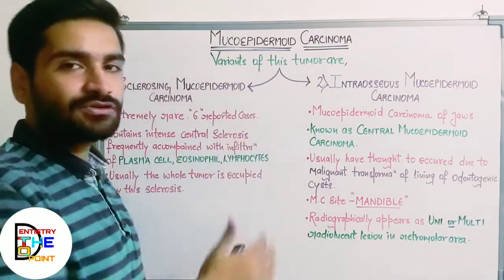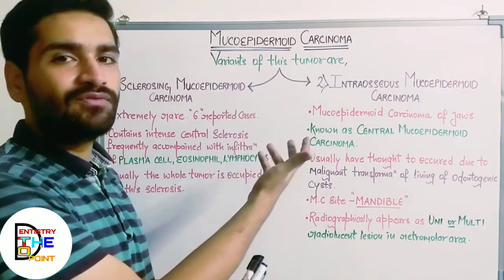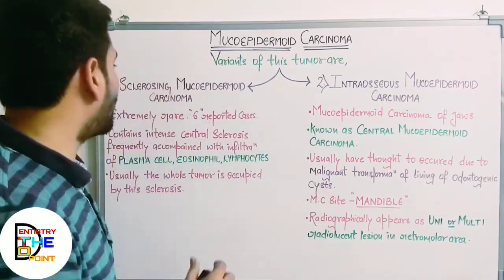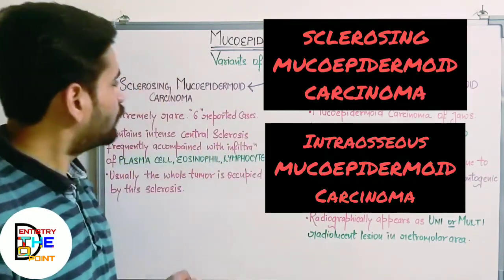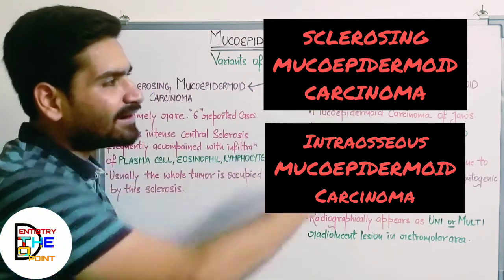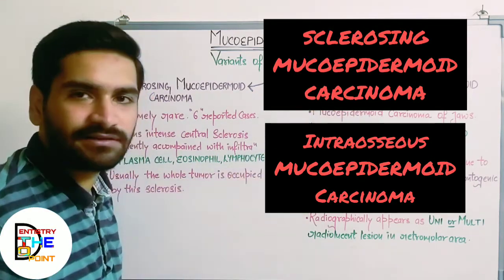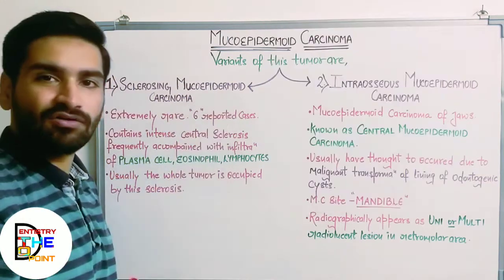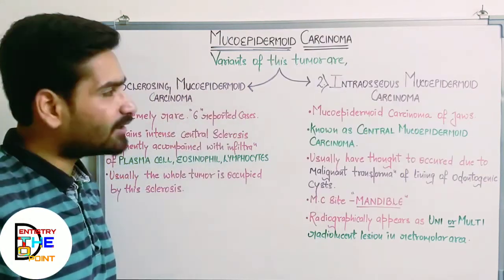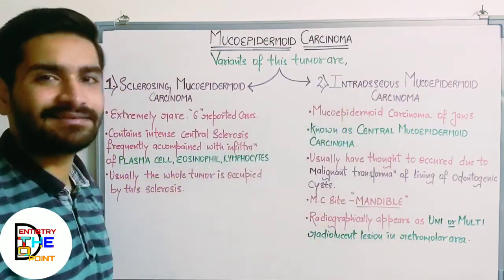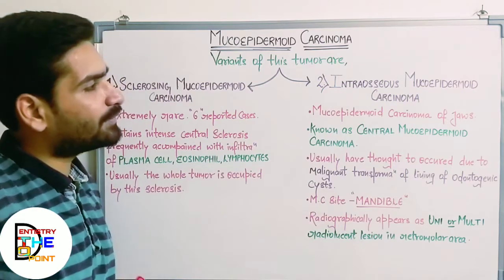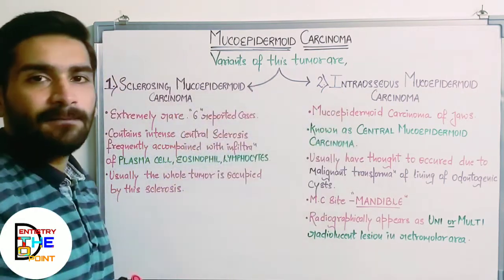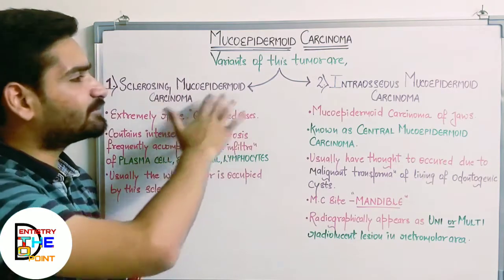The two variants of mucoepidermoid carcinoma are: sclerosing mucoepidermoid carcinoma and intraosseous mucoepidermoid carcinoma. These two are the only recognized variants of this tumor type.